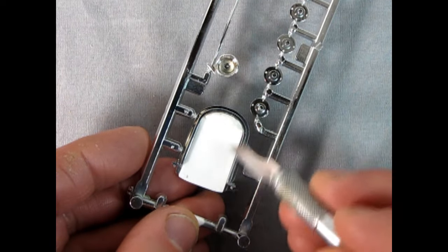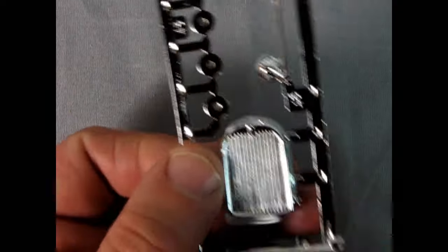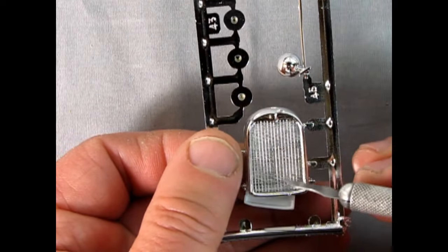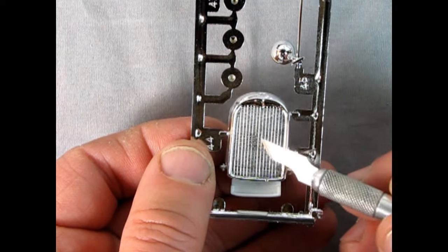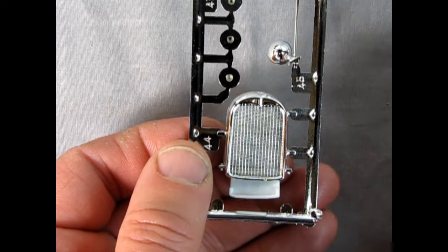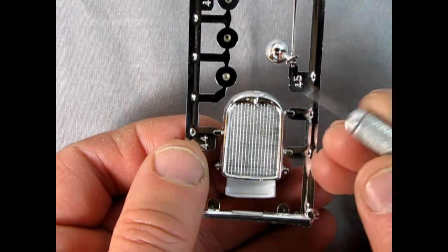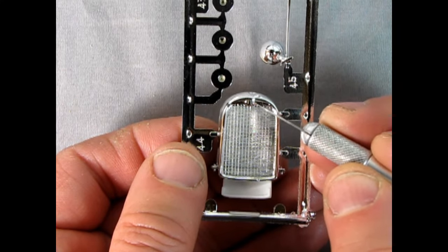I also have to paint the back here all flat black as well as painting inside the radiator. Now you could remove this and add in a mesh if you want but I'm not going to do that on this model because I want to show how it builds right out of the box. So just a black wash in there will be fine. And there's also a Citroën decal on the decal sheet which will go right into here.